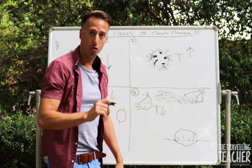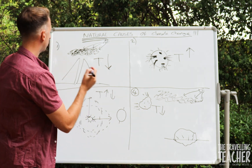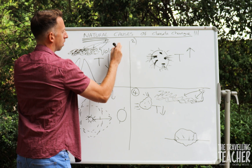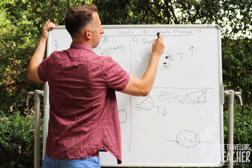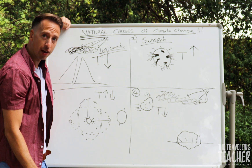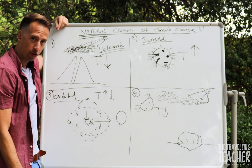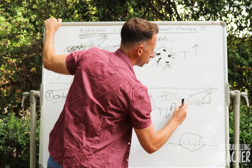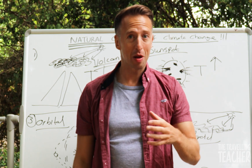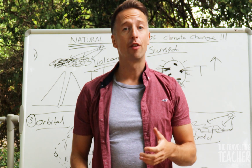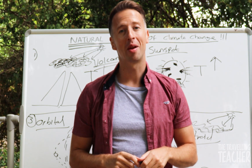So in summary, when we look at the natural causes of climate change there are four: number one, the volcanic eruption theory; number two, sunspot activity theory; number three, the orbital change theory; and number four, the asteroid collision theory. Hopefully that was useful and makes sense — please use it with your revision. If you liked this video, please give it a like, add a positive comment below, and subscribe to this channel.